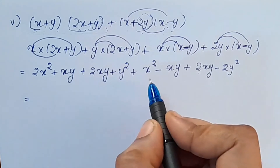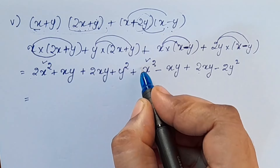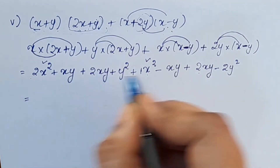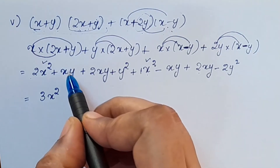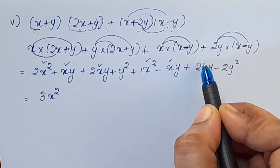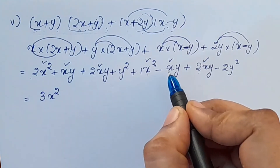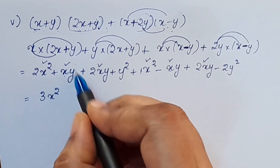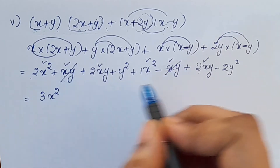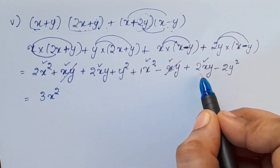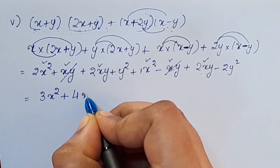Now we have like terms. x² appears twice: 2x² plus x² is 3x². xy appears four times. Minus xy plus xy will be cut. Plus 2xy plus 2xy gives 4xy.